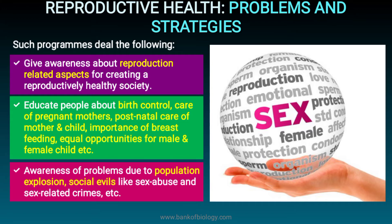Awareness about problems due to population explosion, and social issues like sex abuse and sex-related crimes. This includes prohibiting intimate relations with minors — those below 18 years of age — and discouraging social crimes, encouraging instead proper marriage so that couples can have children in the future.